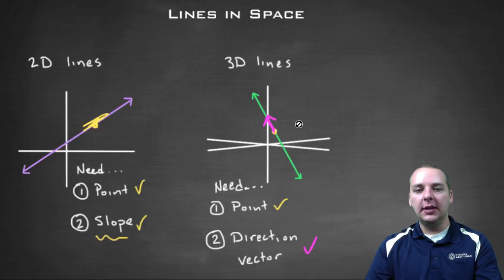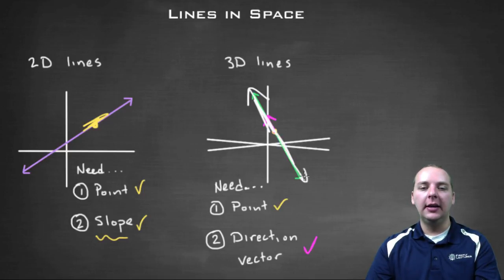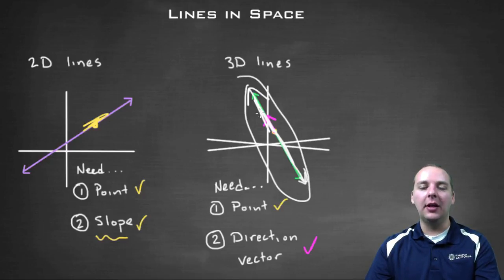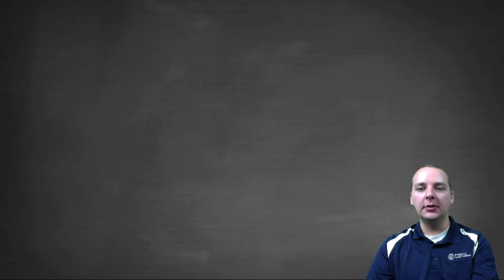some t values will sketch the forward part of the line in this direction, the negative t values will sketch the other half of the line in the other direction, and as you range over all t values, you get the entire line. So basically that's how it works.